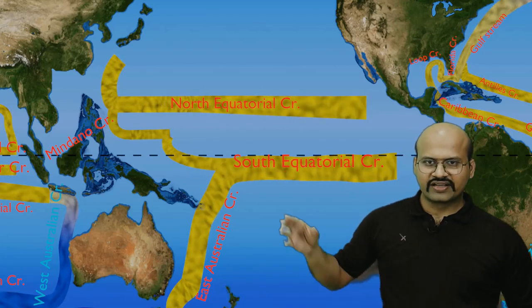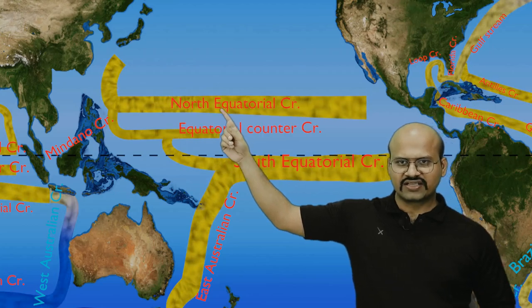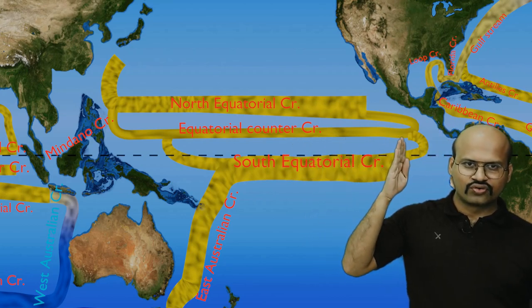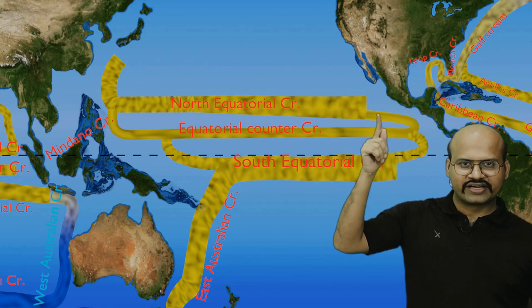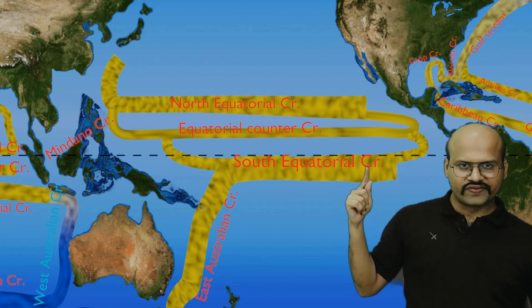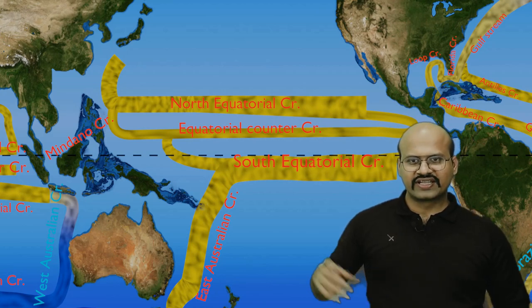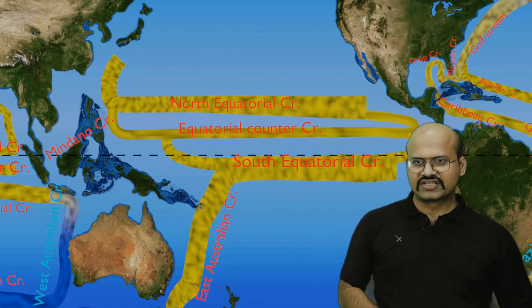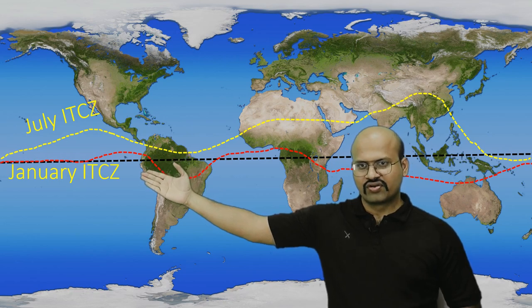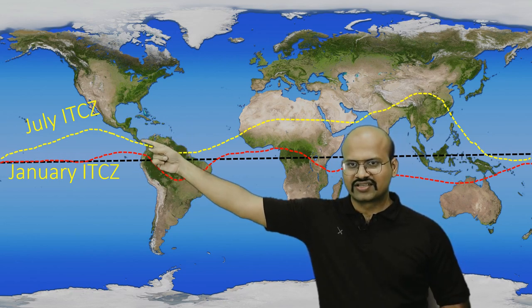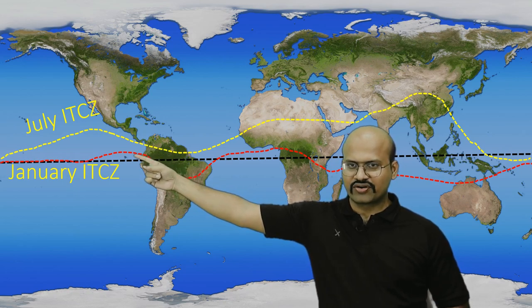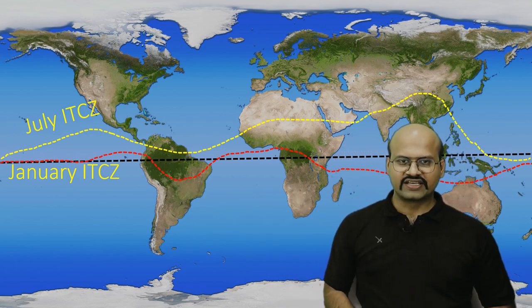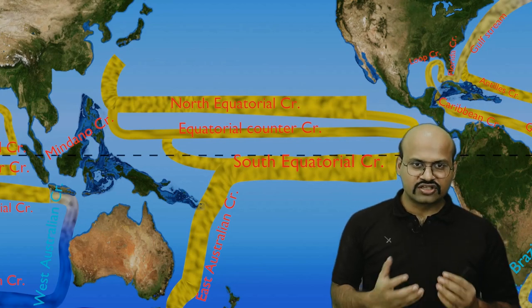The northern part of the South Equatorial Current and the southern branch of the North Equatorial Current combine to form the equatorial counter current, which flows towards the eastern margin of the oceans and then rejoins the North and South Equatorial Currents. This equatorial counter current is positioned a little north of the equator because the ITCZ overall remains in the northern zone — between its summer northern boundary and winter southern boundary — and therefore the equatorial counter current also always remains north of the equator.